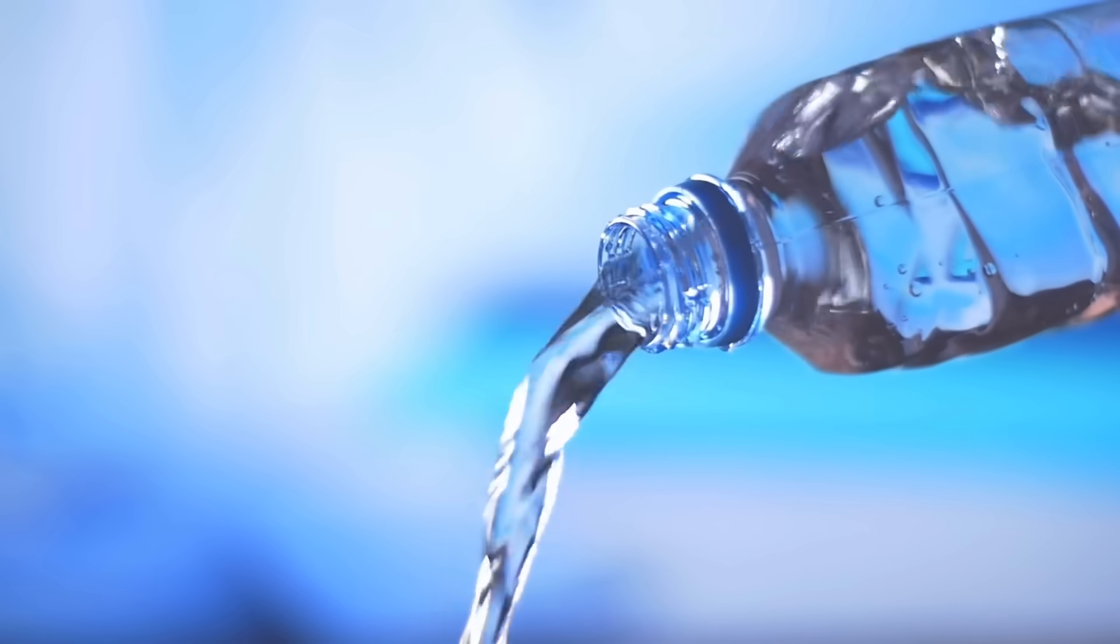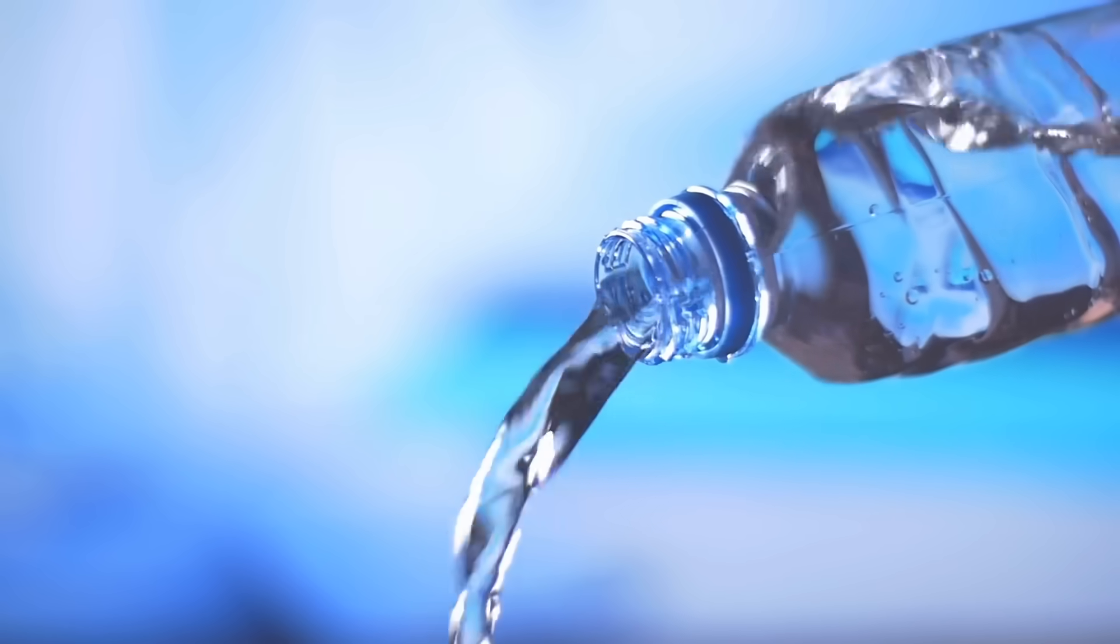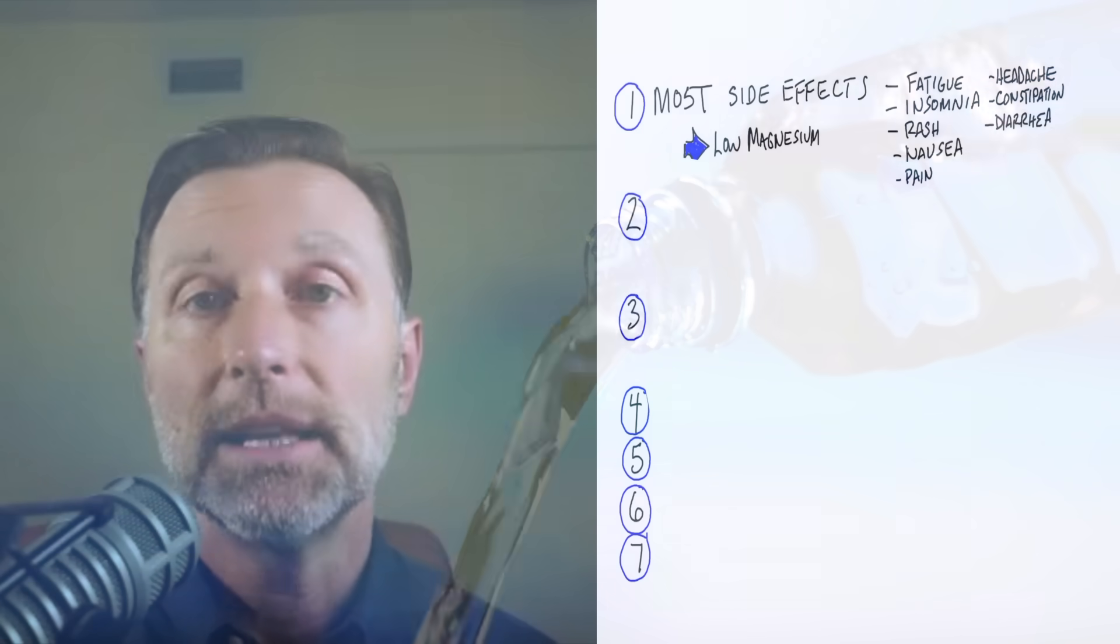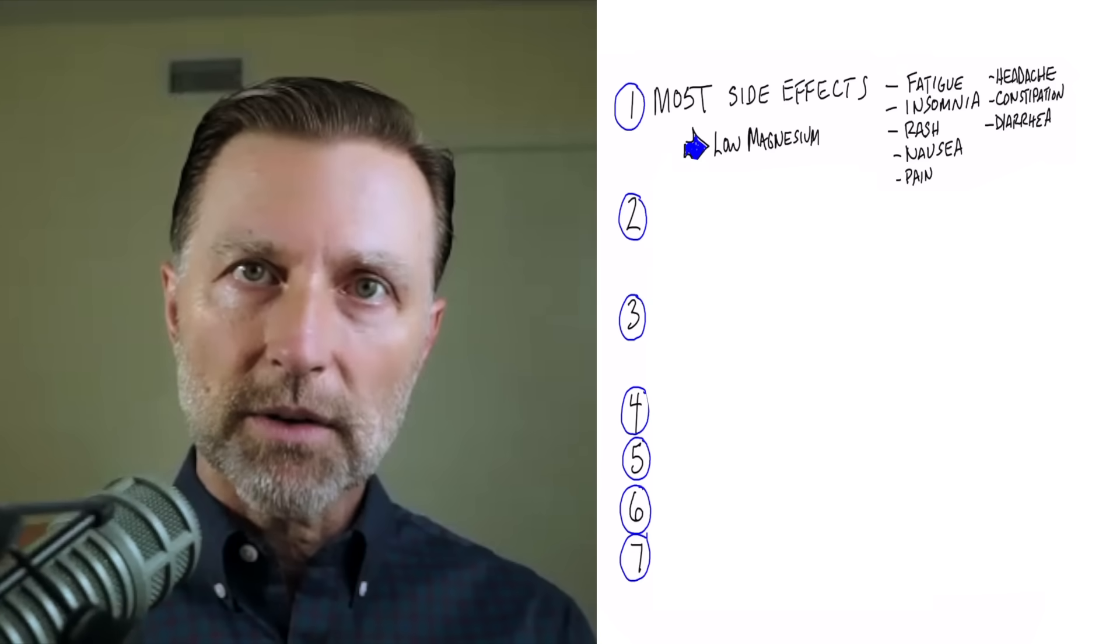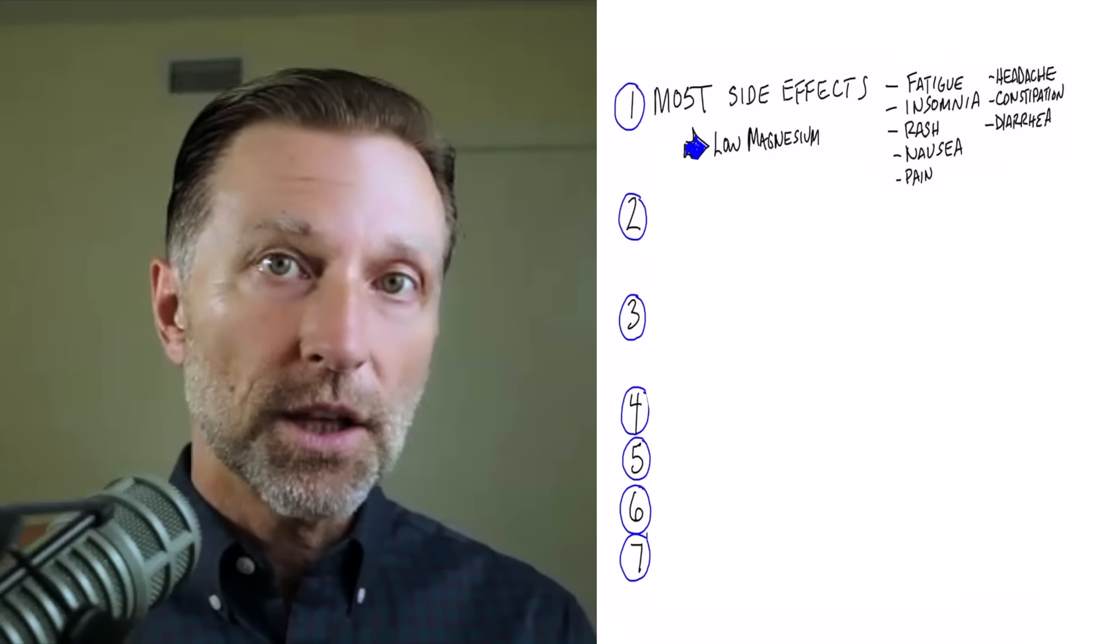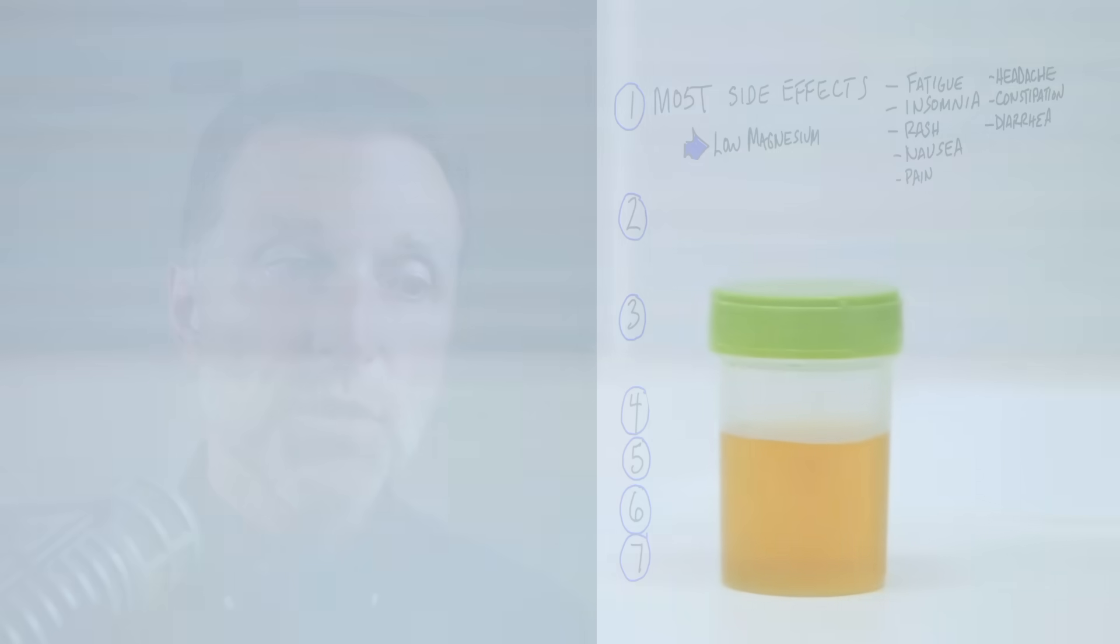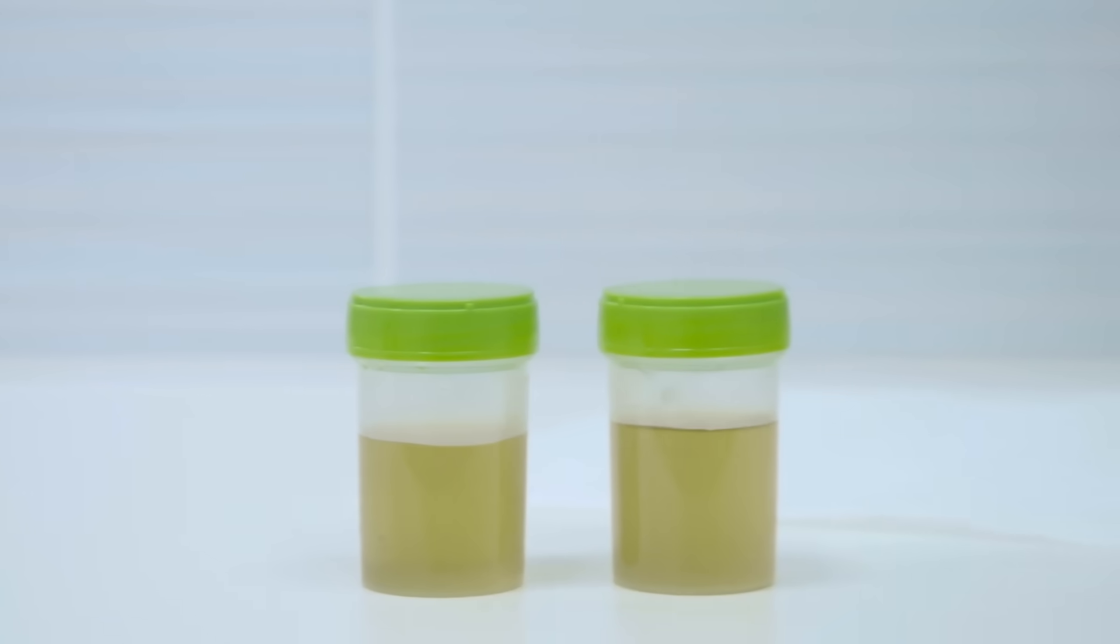But drinking a little bit more water, like 2.5 liters of fluid per day, can really almost eliminate the formation of kidney stones. Because kidney stones form when there's a super concentrated amount of calcium in the urine. So if your urine is diluted, it can never be super concentrated.